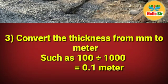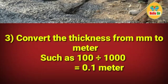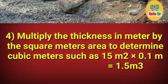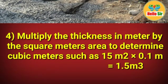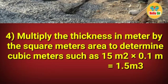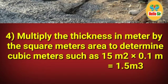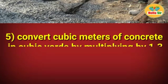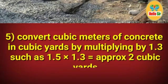Then convert the thickness from millimeters to meters: 100 divided by 1000 equals 0.1 meters. Then multiply the thickness in meters by the square meter area to determine cubic meters: 15 square meters multiplied by 0.1 meters equals 1.5 cubic meters.